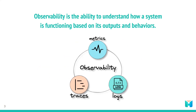Observability is the ability to understand how a system is functioning based on its outputs and behaviors. It uses three types of telemetry data, often referred to as the three pillars of observability: logs, traces, and metrics. This data provides visibility into a software system and allows development teams to get to the root cause of various issues to improve performance.